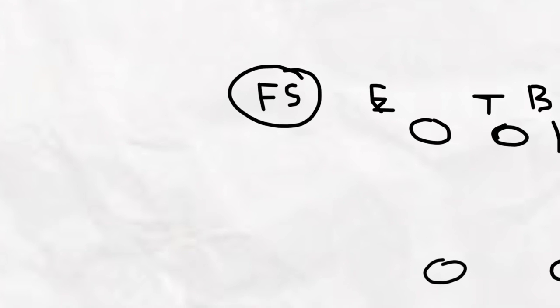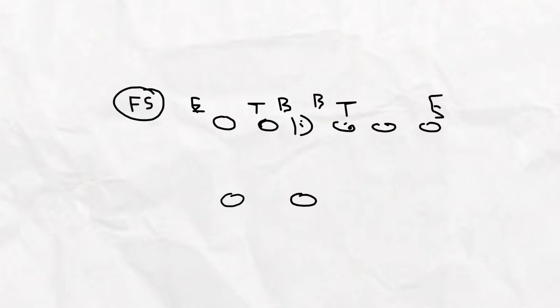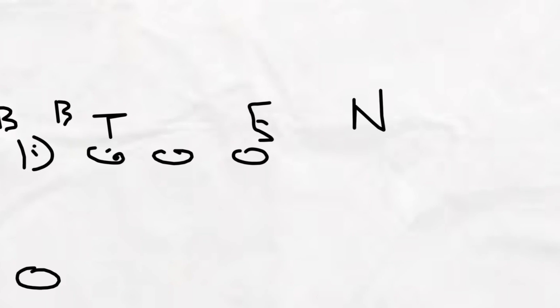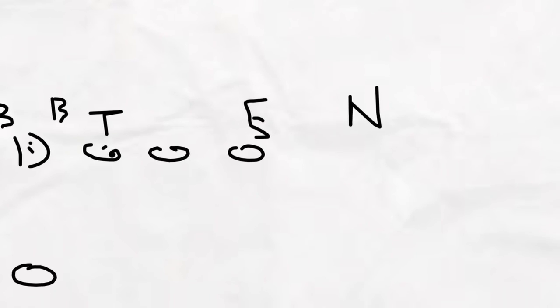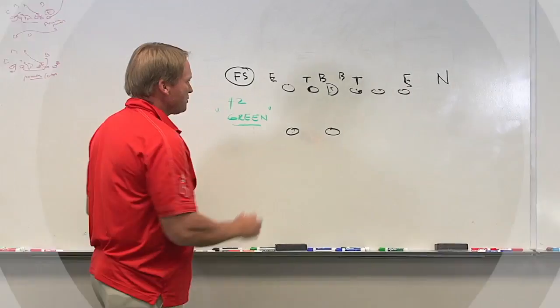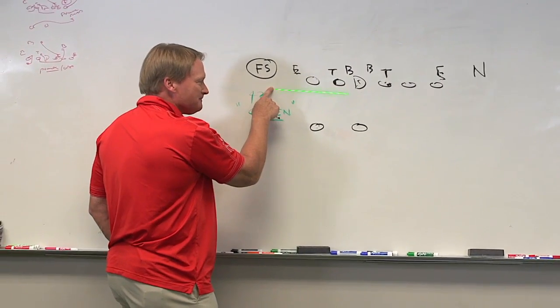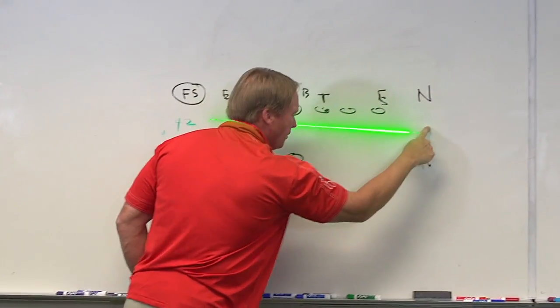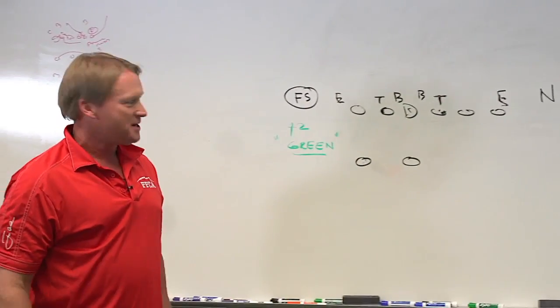Then he takes his free safety, Harrison Smith, and he lines him up on the line of scrimmage. Then he takes his nickel corner and he puts him on the line of scrimmage on the strong side. So now they got four defenders on one side of the center and four defenders on the other side of the center.